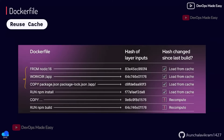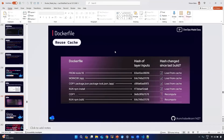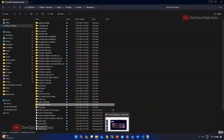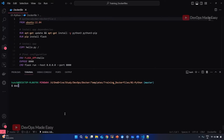You also have the option to build Docker images without considering the cache. When running docker build, if you don't want to use the cache, just add --no-cache. Even though cache is available, Docker will build all layers from scratch. You can also view cache data locally by running 'docker system df', which will show you the build cache.